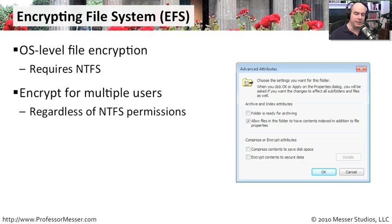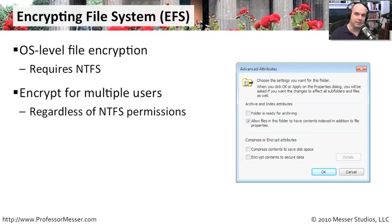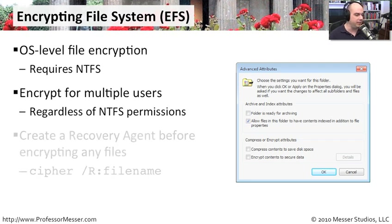You can have encryption set up for every single user on a computer. Some people running on one account will encrypt with their special encryption key, and someone running in a different account will use a completely different encryption key. That way, everybody logging into a computer can keep their information private. This has nothing to do with permissions per se — somebody may have permission to access a file but find it is encrypted, so they can't understand what's inside.